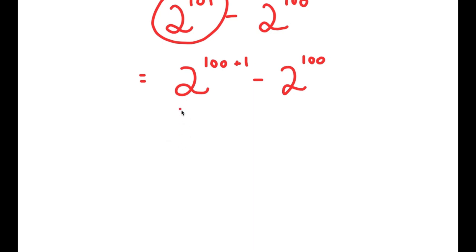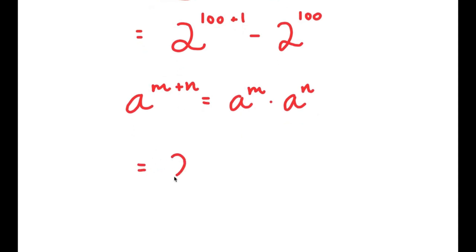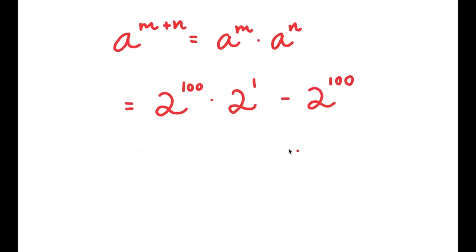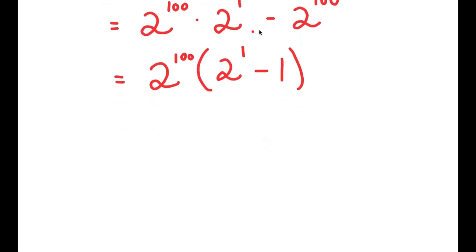The reason I did that is because now I can use the property that if I have a to the power of (m + n), this equals a^m times a^n. So 2 to the power of (100 + 1) equals 2 to the power of 100 times 2 to the power of 1. Now I have this minus 2 to the power of 100. From here I can factor out 2 to the power of 100, giving me 2^100 times (2^1 - 1). Since 2^1 is 2 and 2 minus 1 is 1, I'm left with 2 to the power of 100 times 1, which equals 2 to the power of 100.